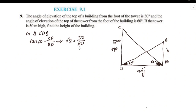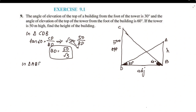Solving for BD: BD = 50/√3. Now, in triangle ABD, the angle is 30 degrees. Opposite over adjacent is tan, so tan 30° = AB/BD.